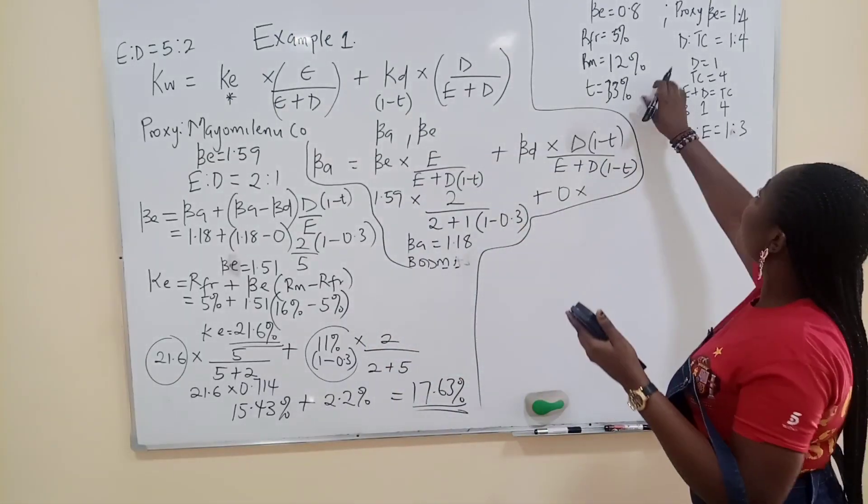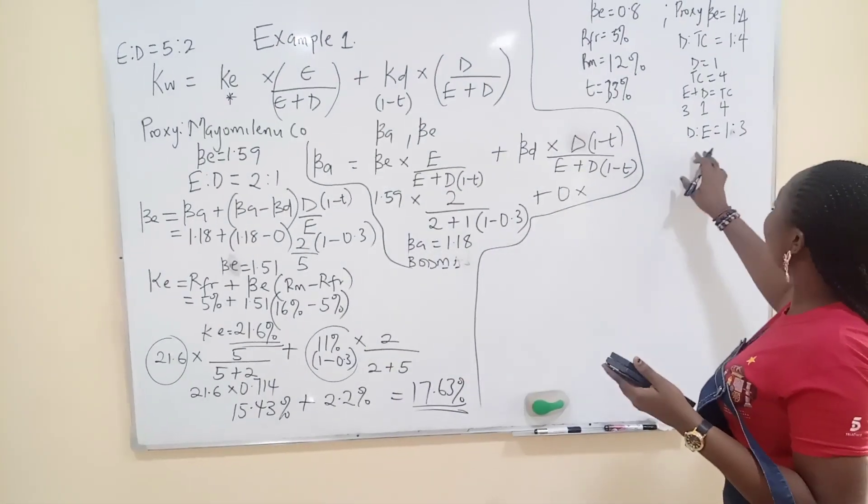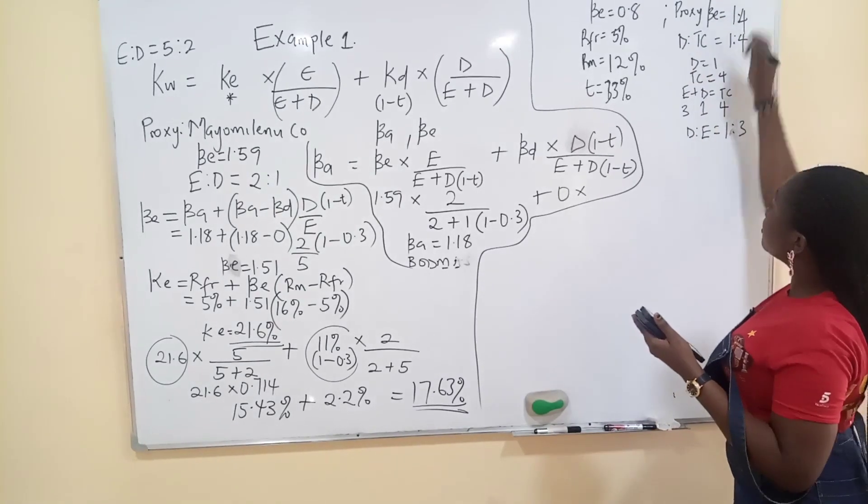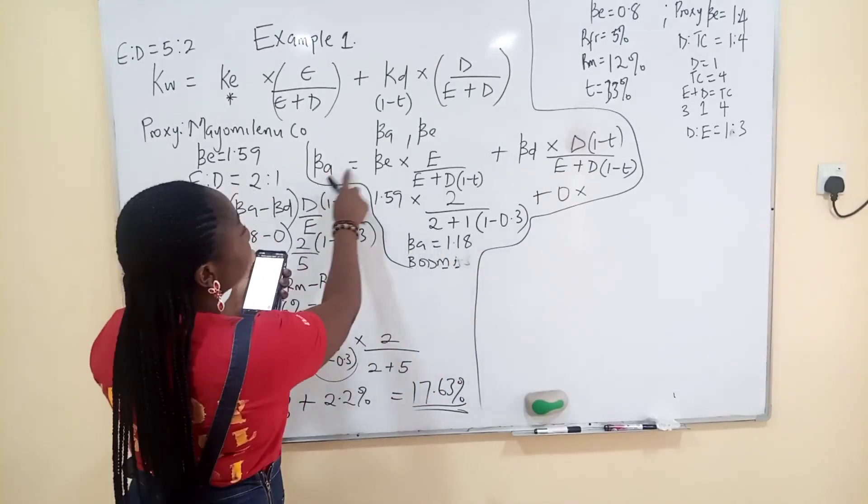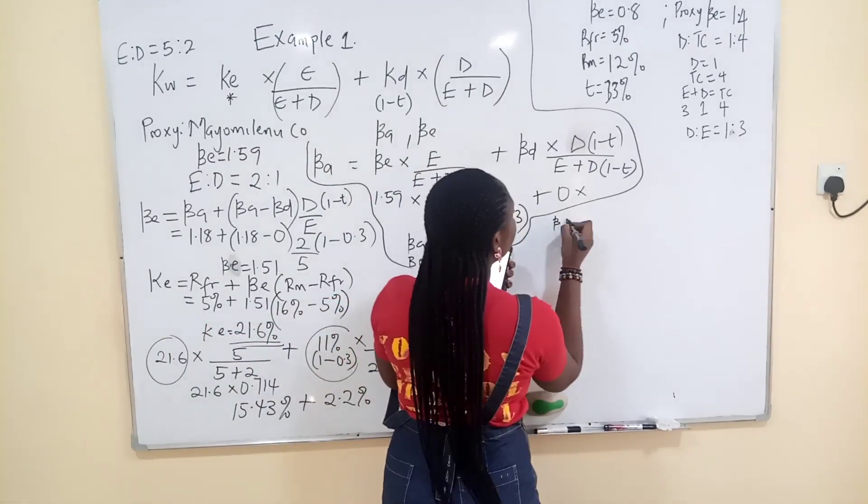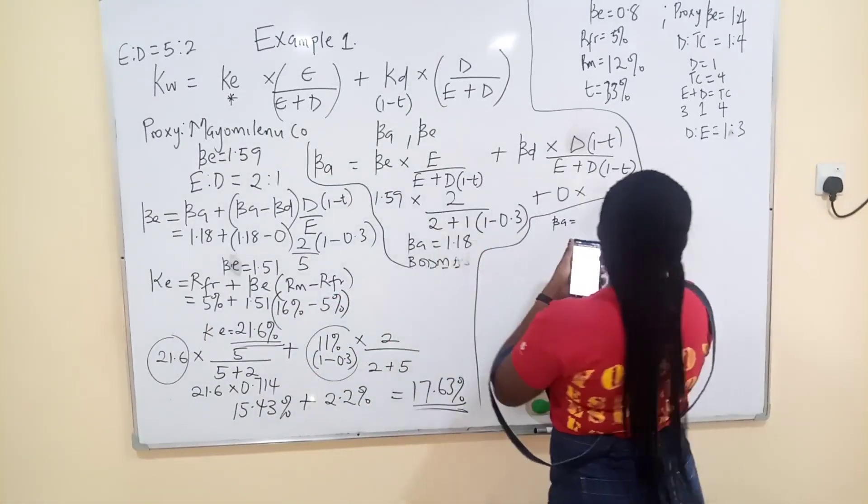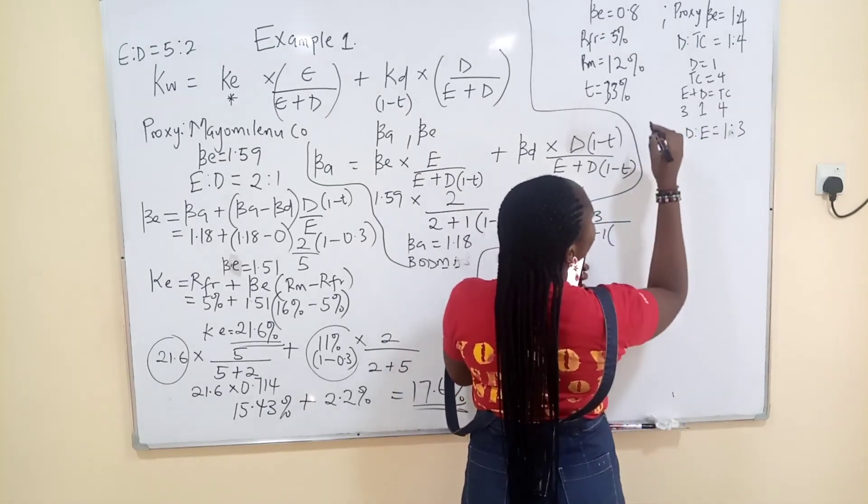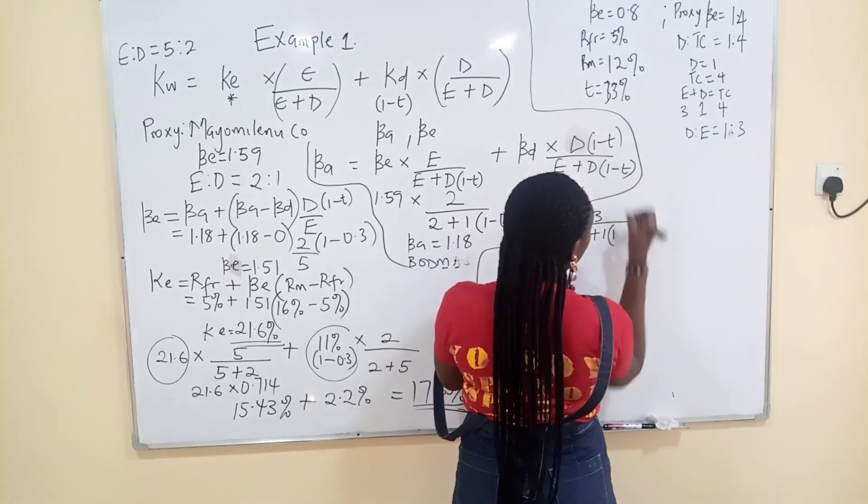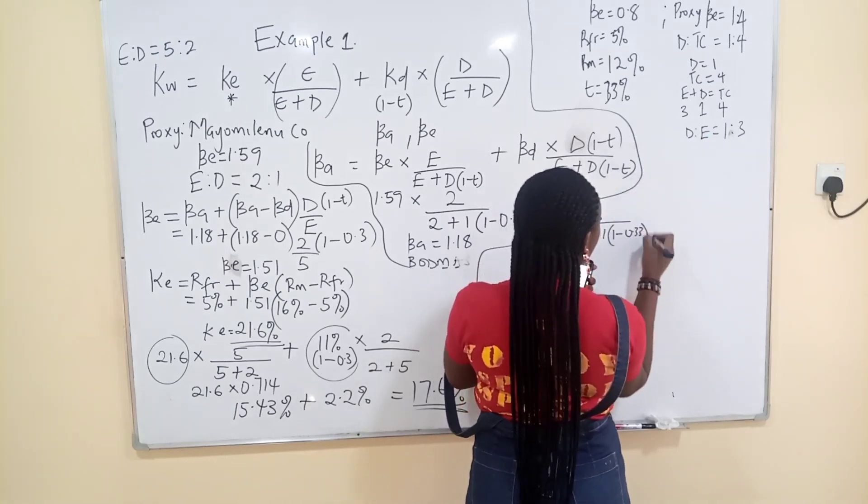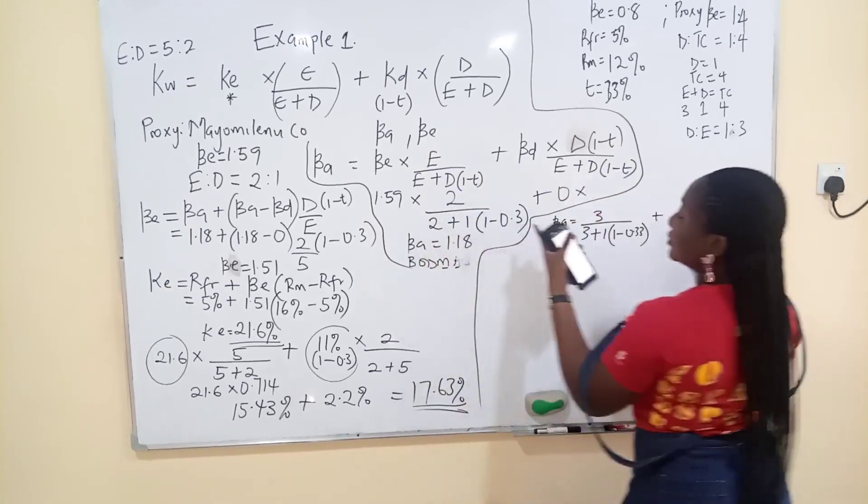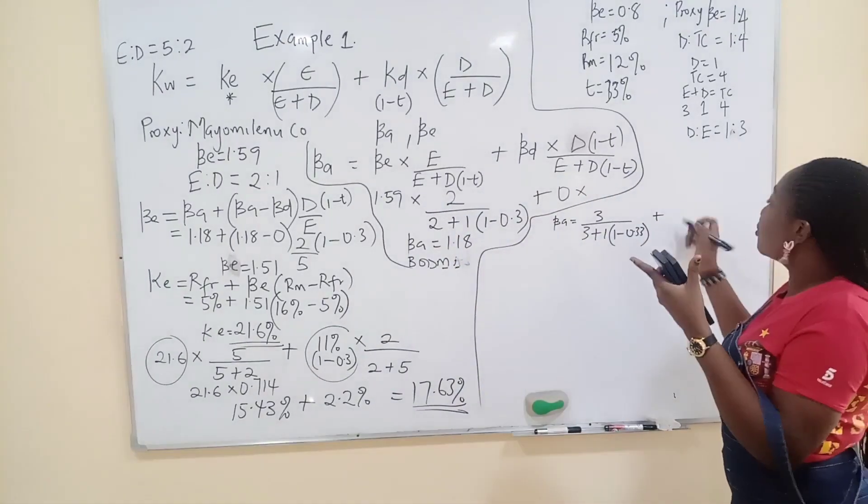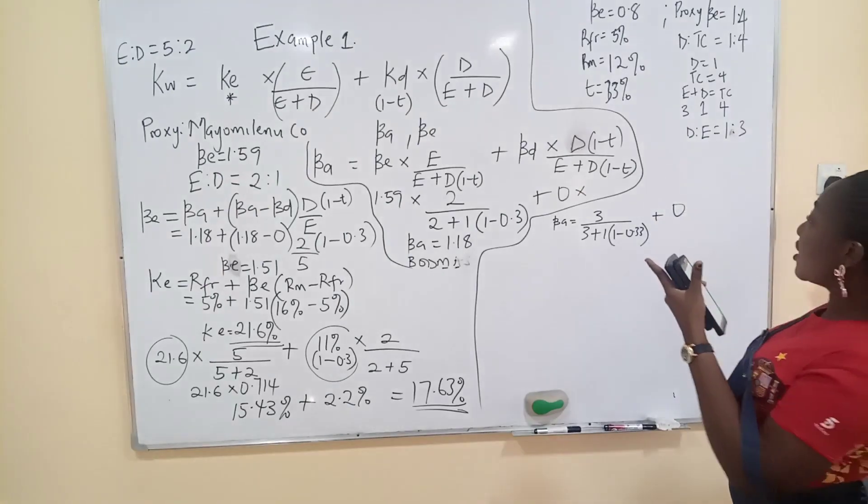You have identified the proxy company. You are looking for the business risk now. You are looking for the computer manufacturers and you have the equity beta. So go ahead and degear it to be this proxy. And when you want to degear it, don't forget the formula. So BA equals what? BE, 1.4, times 3 over 3 plus 1 into 1 minus C, 0.33. Plus BD. Most times this is zero so you just cancel out everything here.